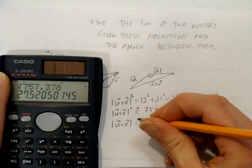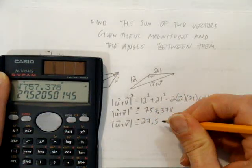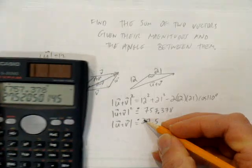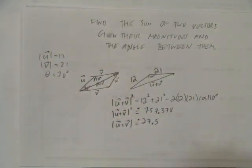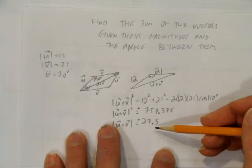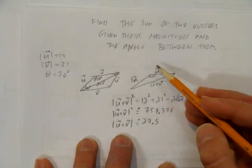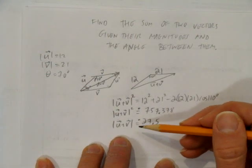And I get approximately 27.5. Put my approximate dot. Need my units. Oh, and there were no units in this question. It was just given as base units, so I can just leave it as 27.5. I'm trying to find the sum of the two vectors, and I've got the magnitude.